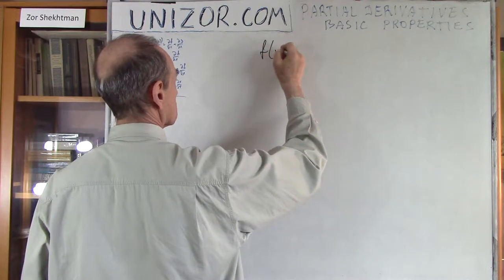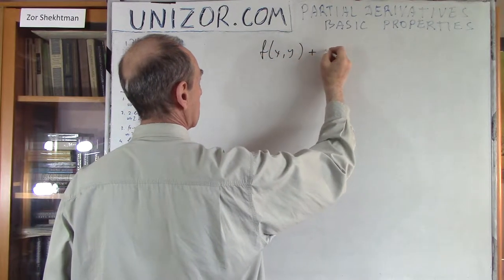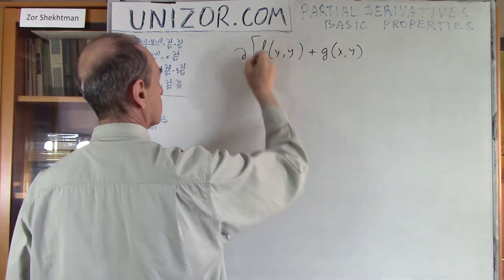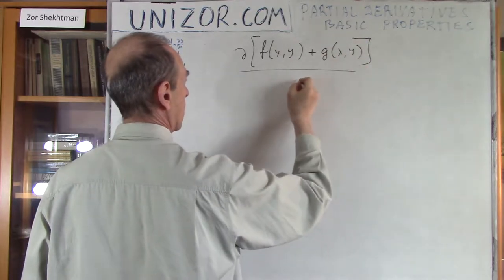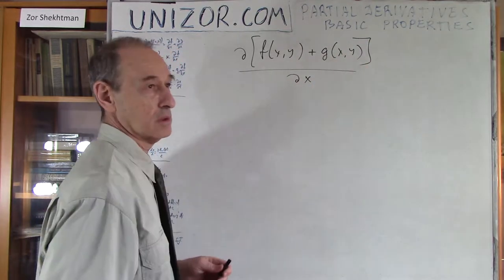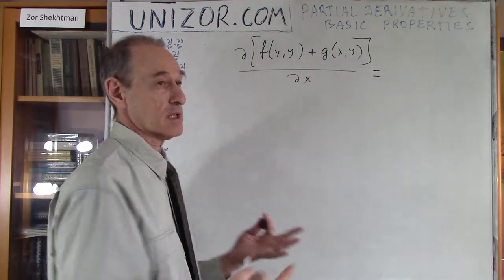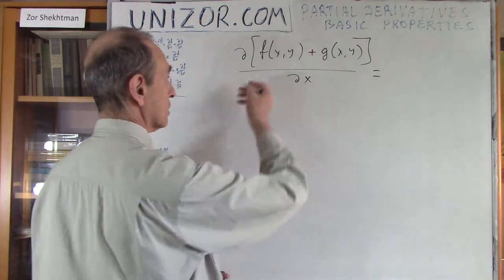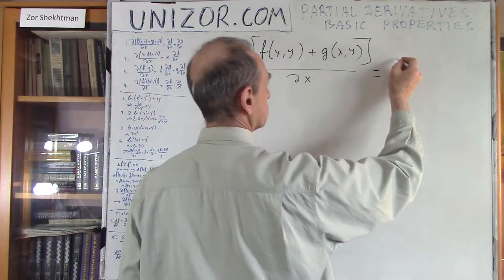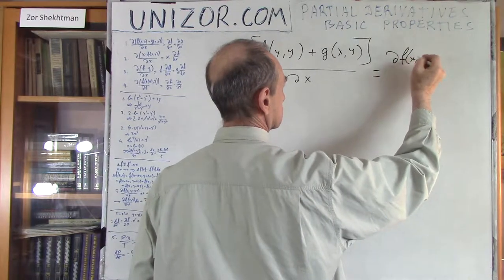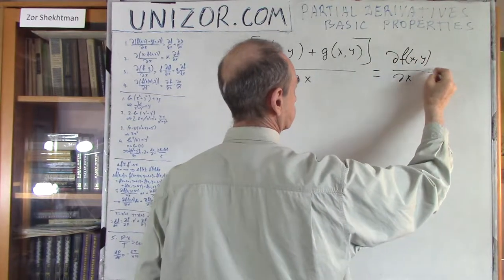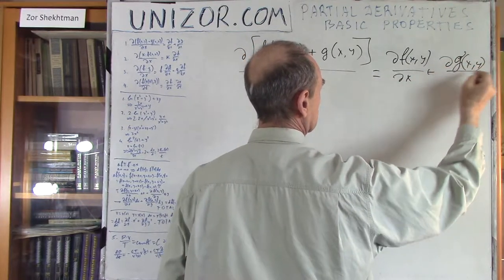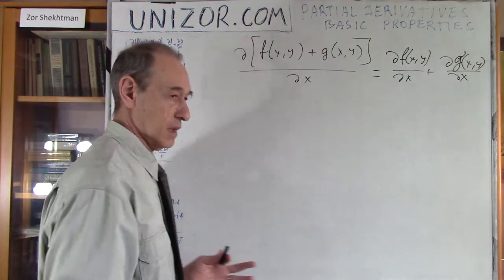For instance, if we have two functions of two variables and we take their sum, the partial derivative of this sum by one particular variable — since y is basically a constant and x is the only variable we are differentiating by — it should be equal to the sum of the derivatives.